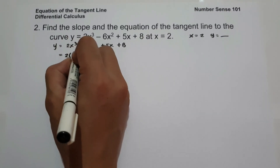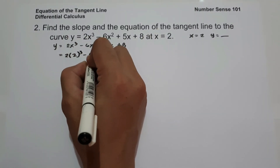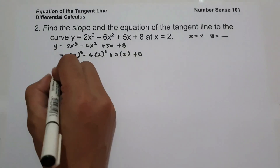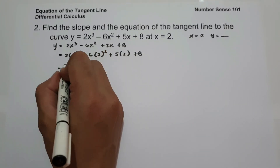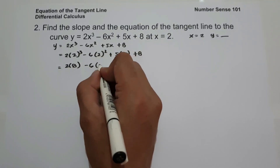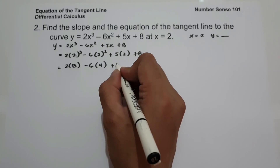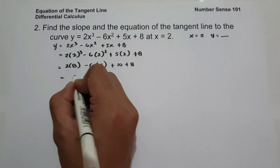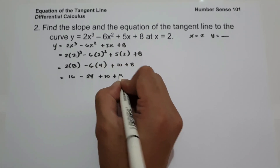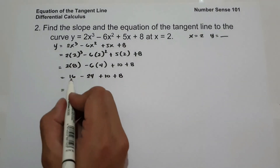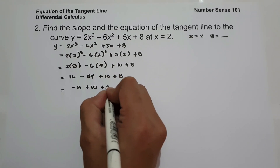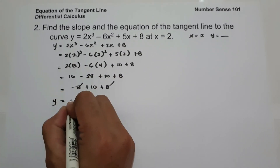Substituting x = 2: 2 times 2 raised to 3 minus 6 times 2 squared plus 5 times 2 plus 8. 2 cubed is 8, so 2 times 8 is 16. 6 times 2 squared (which is 4) is 24. 5 times 2 is 10, plus 8. So we have 16 minus 24 plus 10 plus 8. 16 minus 24 is negative 8, plus 10 plus 8 equals 10. So the value of y is 10.